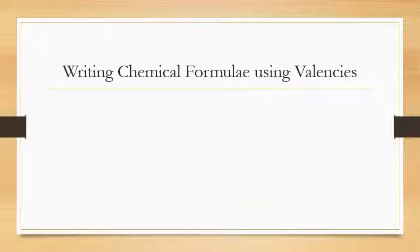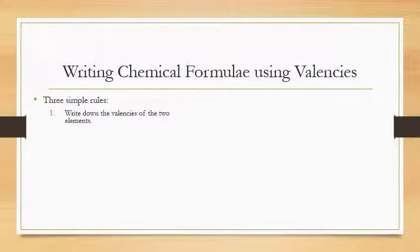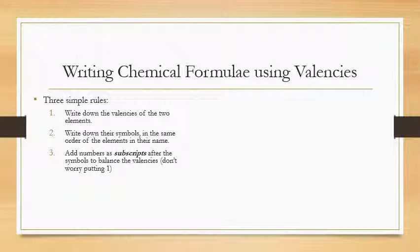We can now write chemical formulas using these valencies. There are three simple rules: write down the valencies of the two elements, write down their symbols in the same order as the elements in their name, and add numbers as subscripts after the symbols to balance the valencies. Don't include a subscript of one — for example, lithium has a subscript of one but we just ignore it.